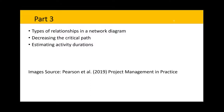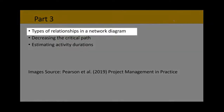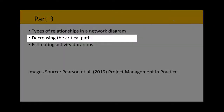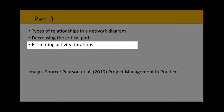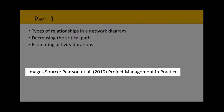Welcome to part three of our three-part series on network diagrams and the critical path. In this video we examine types of relationships in a network diagram. We'll look at methods for decreasing the critical path or the overall project duration, and understand the importance of estimating activity durations correctly. The images in this video come from Pearson's textbook Project Management in Practice.